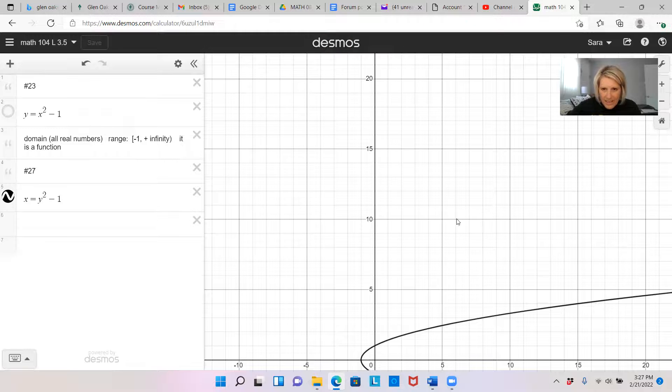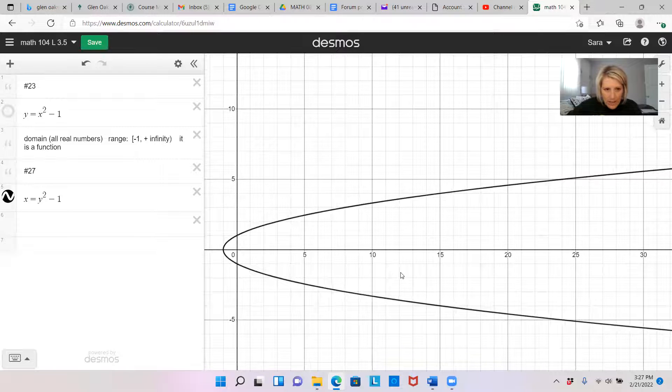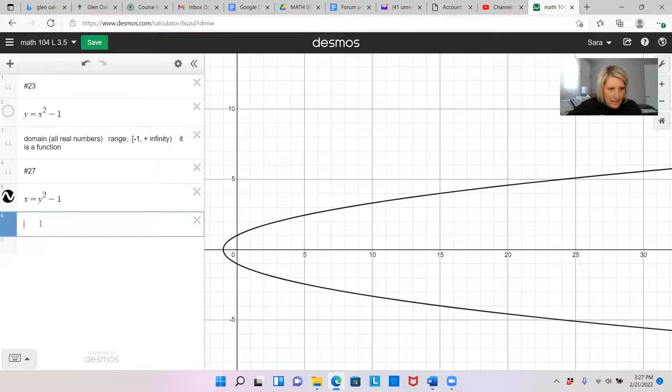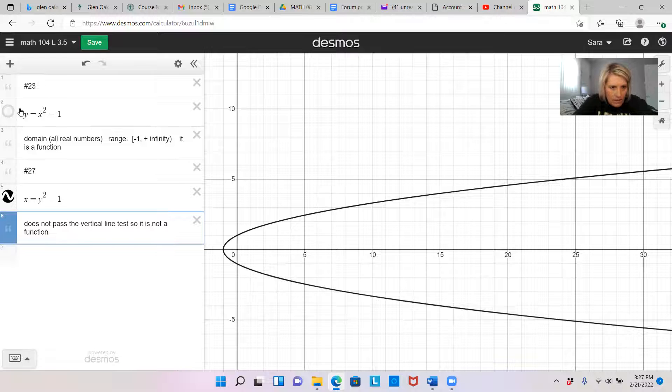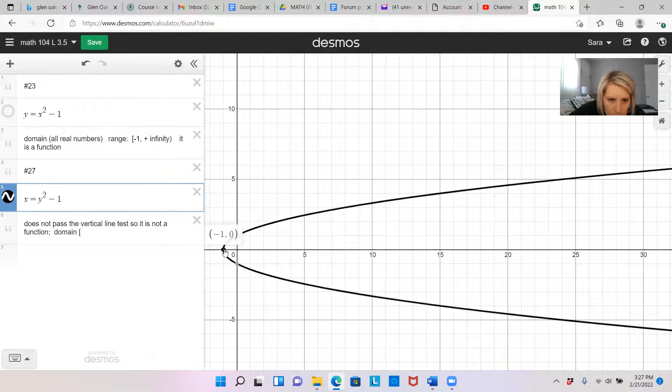But when we look at number 27, I'm going to turn off the graph for number 23 here. It looks like it does not pass a vertical line test. Let's just make a note.